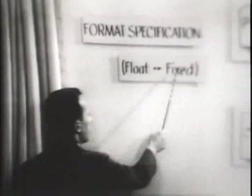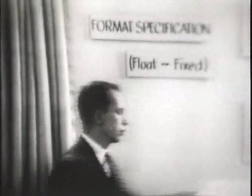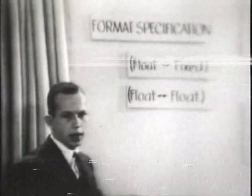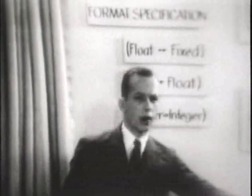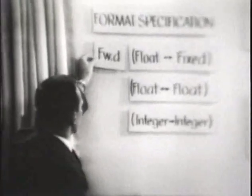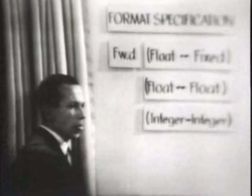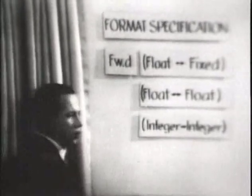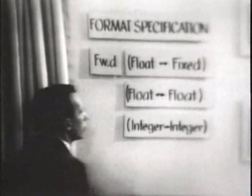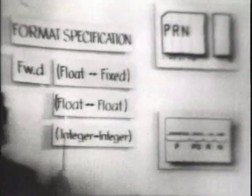FORTRAN provides three types of input and output conversions. The first is floating point internally and fixed point externally. The second is floating point both internally and externally. The third is integer, both internally and externally. In the FORTRAN language, floating-to-fixed point conversion is specified by the letter F. The value W represents the total width of the field — for example, the principal field being four columns wide, W equals four. The letter D specifies the number of decimal places in the quantity; for the value of P, this would be two decimal places, so D equals two. In a similar fashion, floating-point-to-floating-point conversion may be specified by the letter E.